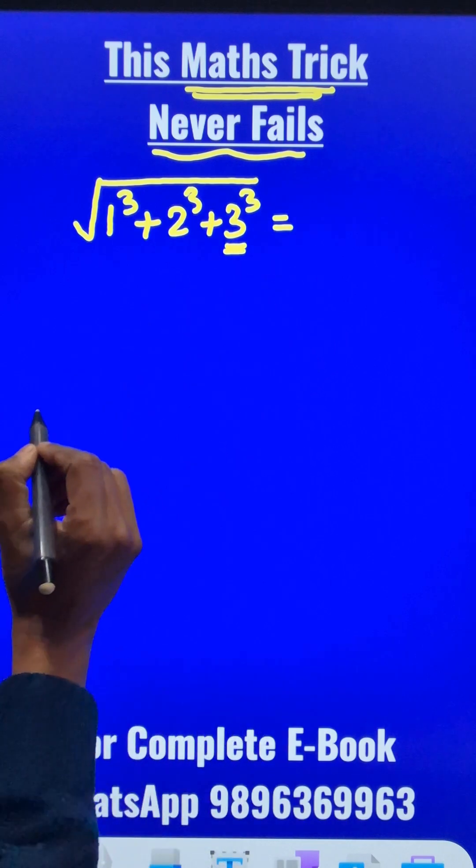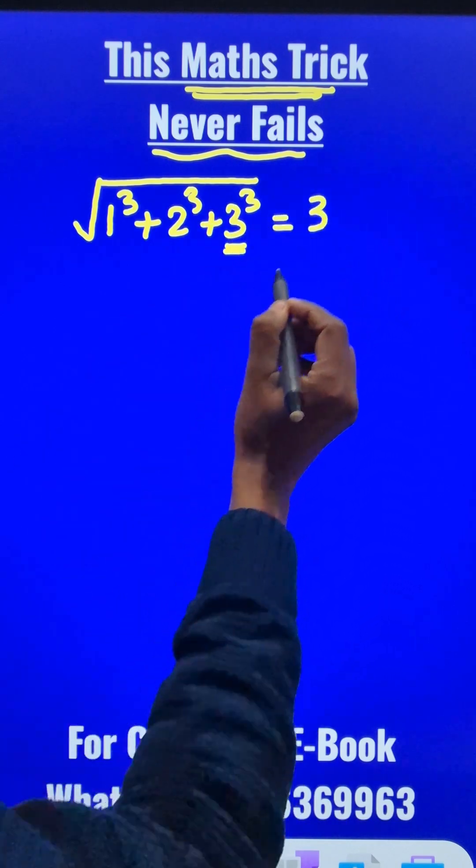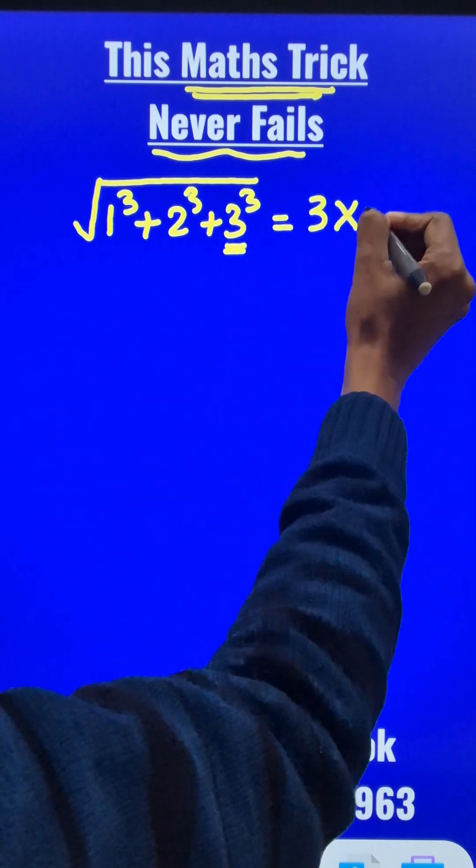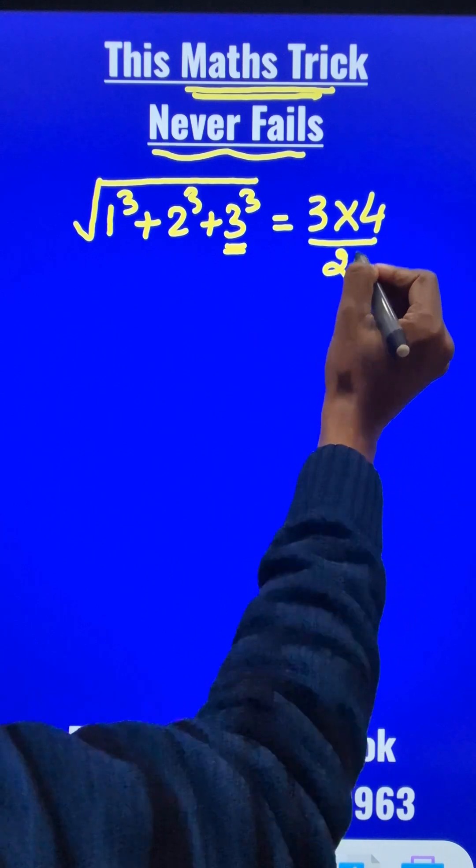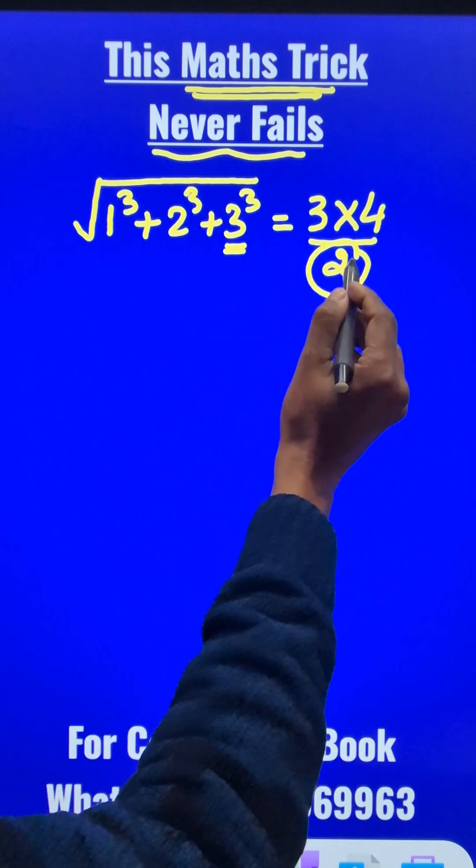Take the last number, 3, multiply it by the next number 4, and divide the result by 2. This is a default formula, so you always write 2 in the denominator.